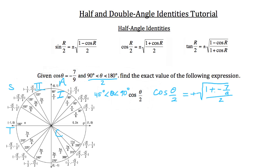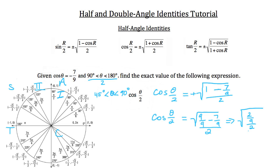So under the radical we have 1 plus negative 7/9, which is 1 minus 7/9. We can rewrite 1 as 9/9, giving us 9/9 minus 7/9 equals 2/9, all divided by 2. To get rid of that divided by 2, I'll multiply by the reciprocal 1/2. So 2 times 1 is 2 in the numerator, and 9 times 2 is 18 in the denominator, giving us the square root of 2 over 18.